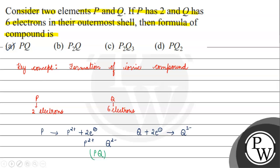P2Q is not formed because that would require P to have a +1 positive charge and Q a −2 charge. Option C, P2Q3, would require P to have a +3 charge and Q a −2 charge. Option D would require P to have a +2 charge and Q a −1 charge. The correct answer is PQ. I hope you understood it well — thank you and all the best!